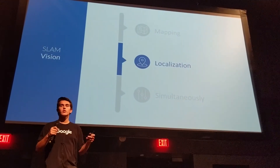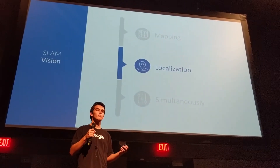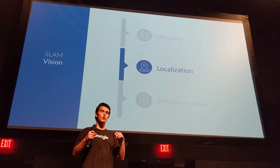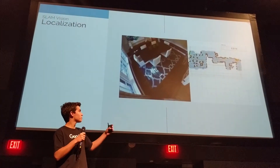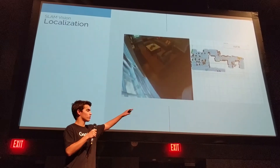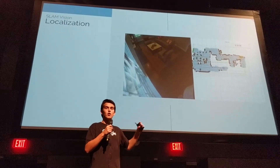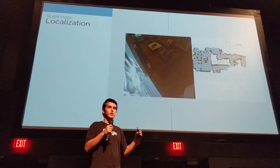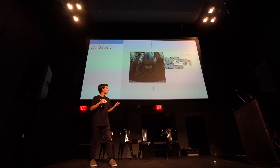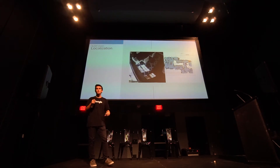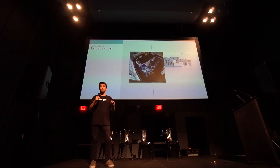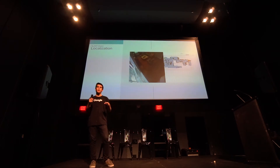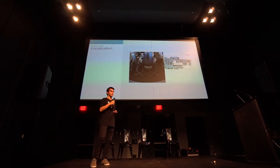Then you get into localization — finding where you are within that map. Now it's got this map, and as you can see on the right side, it's got a lot more organization in its motion. It knows where it's going, knows the place it has to cover, and knows exactly how to get there, using those landmarks identified when it created the map to figure out where it is.